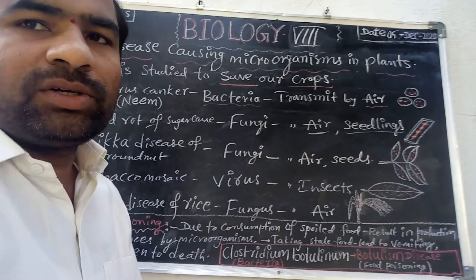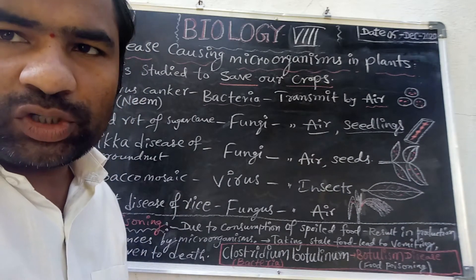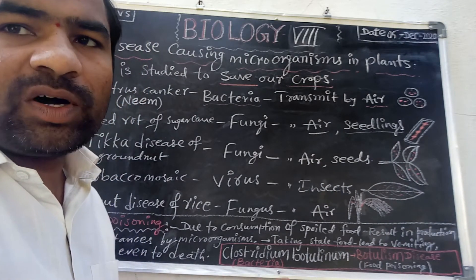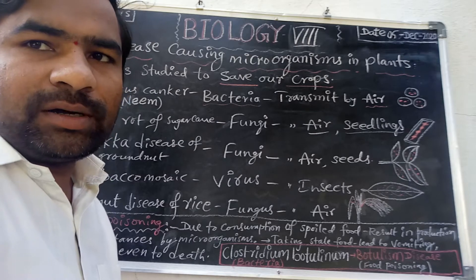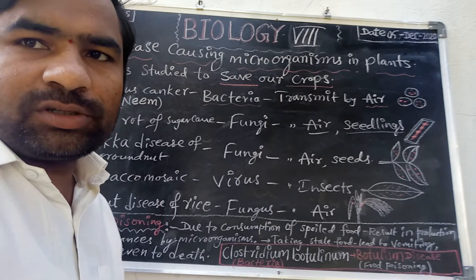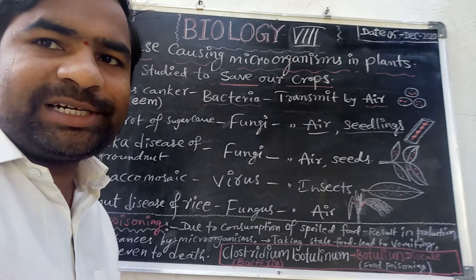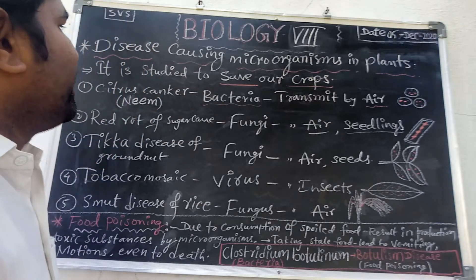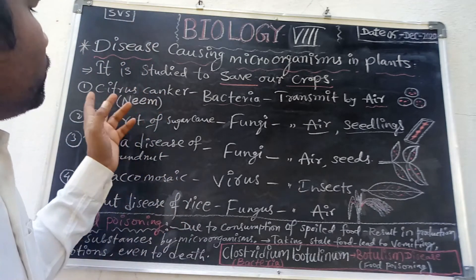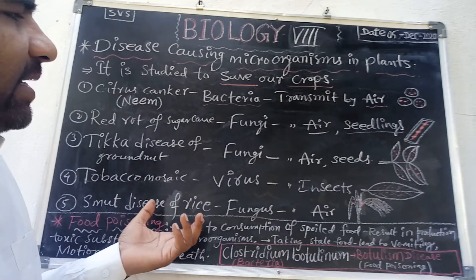We need to study this topic in order to save our crops — to understand which kind of disease will be controlled by which kind of pesticides or fungicides. Here, the name of the disease is given in your textbook table.